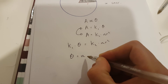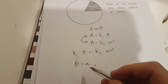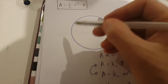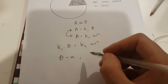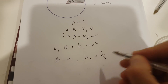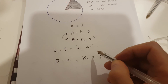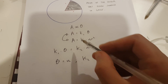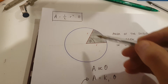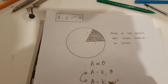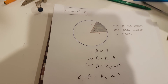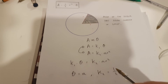Now it turns out when theta is equal to pi, which is actually 180 degrees — so when this angle is 180 degrees — k2 is going to be equal to a half. Because the area of this sector when this angle is 180 degrees, or pi radians, is going to be half multiplied by pi r squared, which is half the area of a full circle.